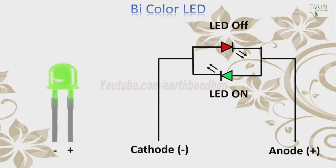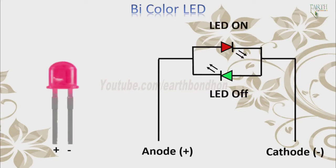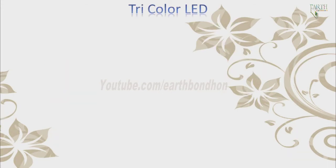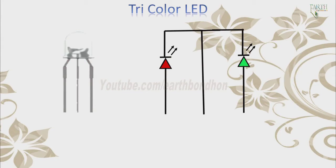When the wire connected to the green anode gets a positive voltage, the LED turns green. When the wire connected to the red anode gets a positive voltage, the LED turns red.